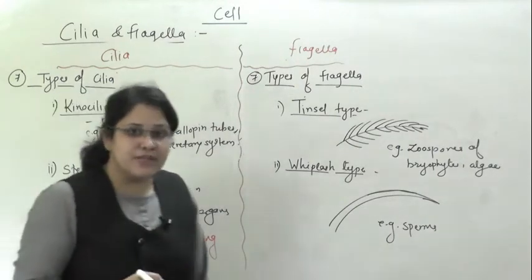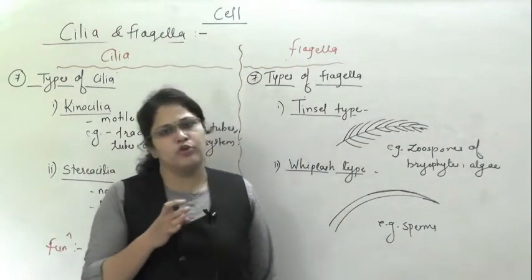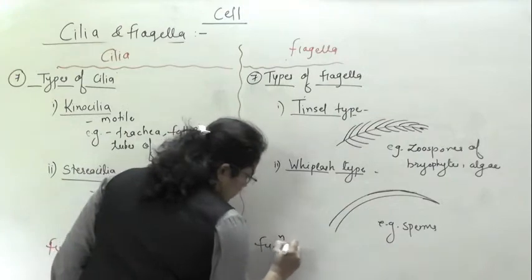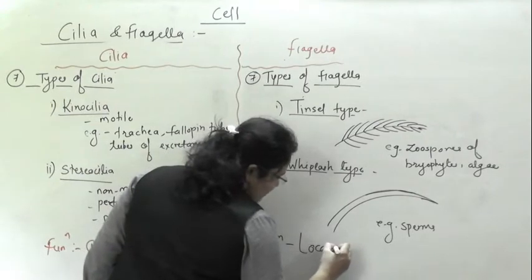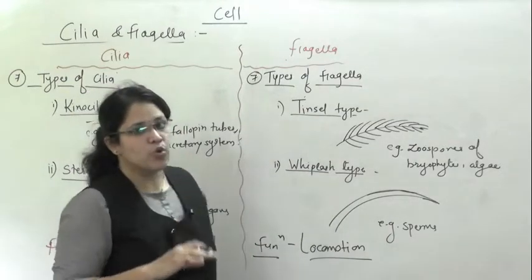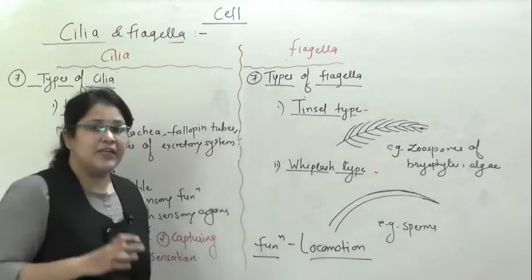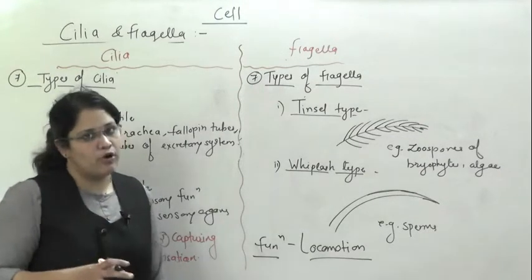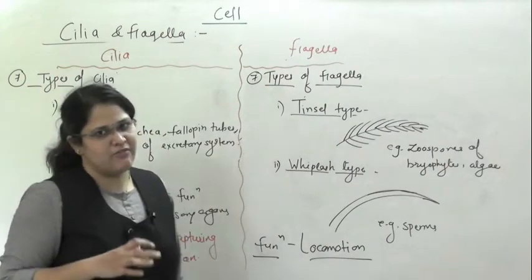Flagellum performs only a single function, that is locomotion. Cilia perform some other functions also along with locomotion, but flagellum performs only the function of locomotion — they are responsible for locomotion of cells. I hope you have understood these differences. If not, just watch this video again and note down all the points.